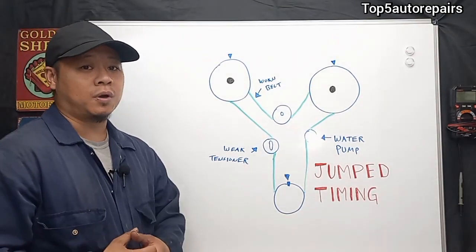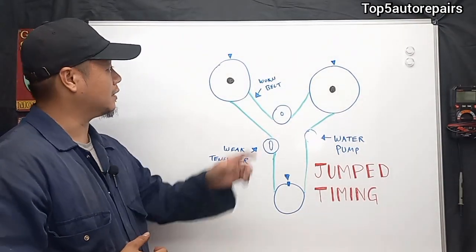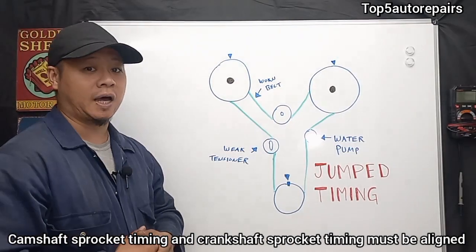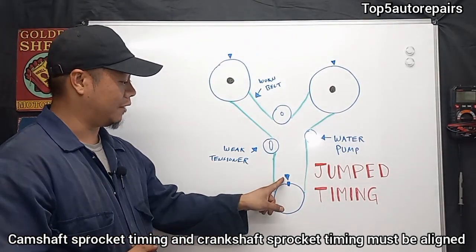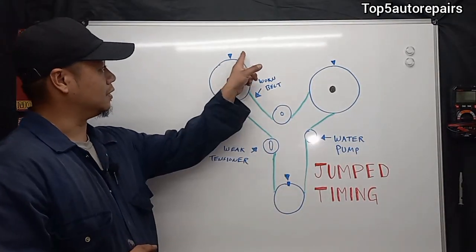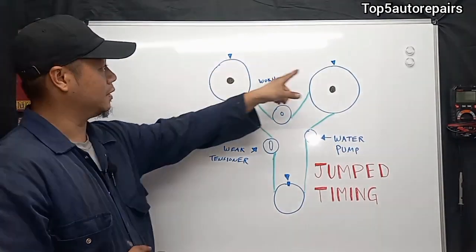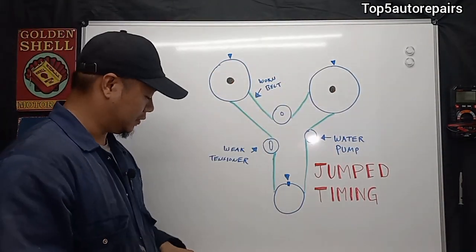The most important part of the timing system is that all the timing must be aligned. For example, right here I have the timing mark and this upside down triangle, and they all must be in line together.